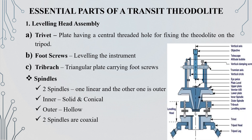We will see the essential parts of the transit theodolite. We will classify them into three main essential parts. The first classification is the leveling head assembly. In the leveling head assembly, there are three parts: the trivet, the foot screws, and the tribracket. These are the three instruments for leveling — this is the leveling head assembly.